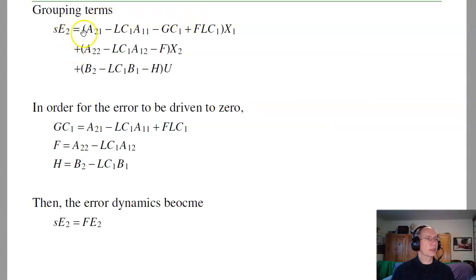So grouping terms, I've got the derivative of e2 is this matrix times x1, this matrix times x2, this matrix times u. Now in order for the error to be driven to zero, I need all of this to go to zero, because otherwise x1 affects the error. So pick gc1 to cancel the first set of terms. I'll pick f to cancel these terms. I'll pick h to cancel these terms. So wind up with se2 is f times e2. It looks like I'm missing an fe2 term here. So this should be se2 equals fe2 plus all this. So I want to force all these terms to zero, resulting in se2 is just fe2.